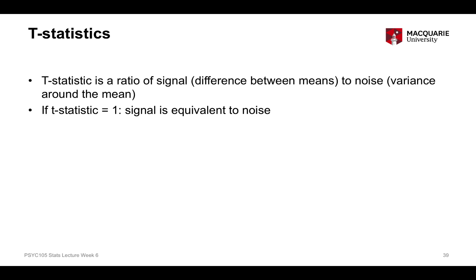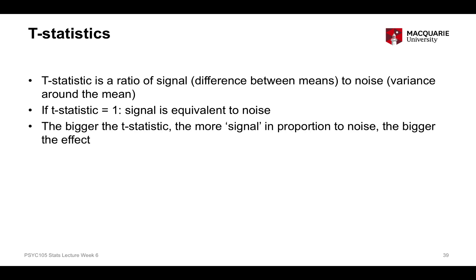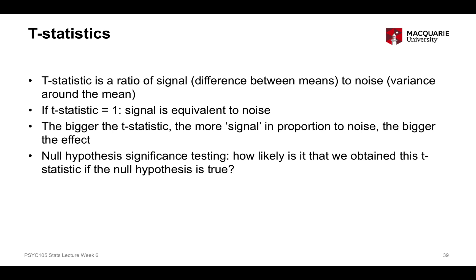As with the one-sample t-test, if the t-statistic equals 1 it means we have equal amounts of signal to noise. Anything bigger than 1 represents more difference between the means in proportion to the variability around that difference. The associated p-value quantifies the probability of obtaining this t-statistic — in this case 3.5 — if the null hypothesis of no difference between the two groups is true. The bigger the t-statistic, the less likely that is, and therefore the more likely we are representing a true difference between the two means.